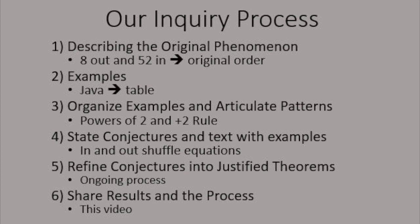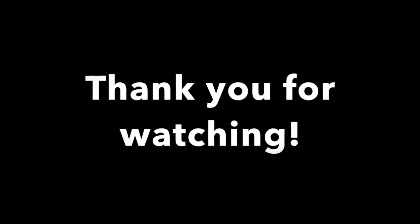To summarize, we started our inquiry process by describing our original phenomenon — that a deck of 52 cards requires 8 out shuffles or 52 in shuffles to return to its original order. We then used Java to generate several examples with different deck sizes, and by looking at the table, we found patterns such as the powers of 2 and the plus 2 rule. We then sought equations that could fully explain our table, and came up with formulas that gave the correct number of shuffles required, verified with Java for all deck sizes tested. We also used these formulas to explain patterns we observed, and recognize that we still need to refine these conjectures into fully justified theorems. The final step in our process was making this video and sharing our results — an important step that made us reflect on everything we had researched and organize it into a way that could be easily communicated. Thank you for watching, and we hope you learned something about what it takes to unshuffle a deck of cards.